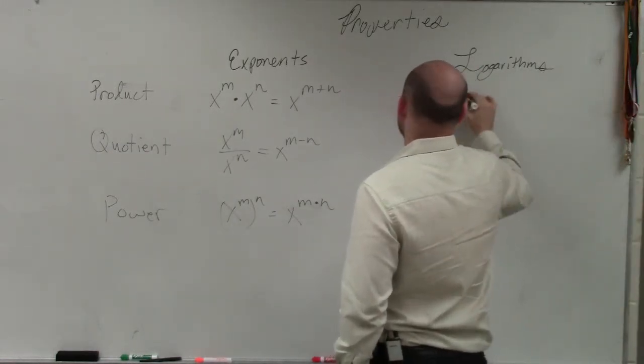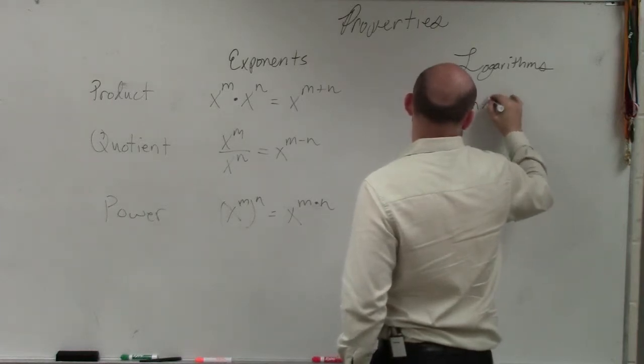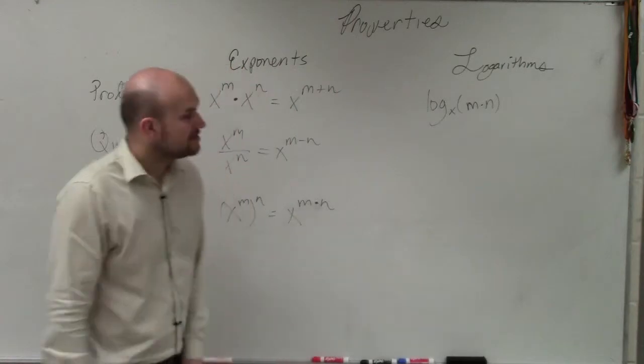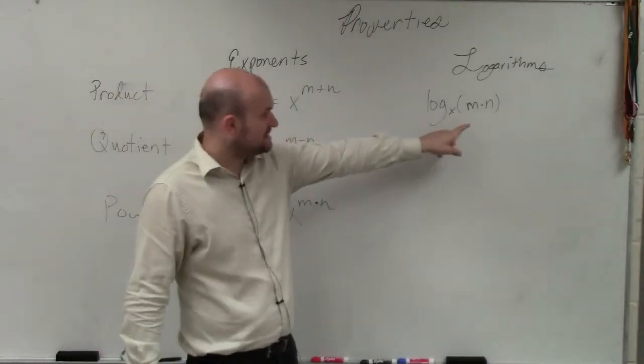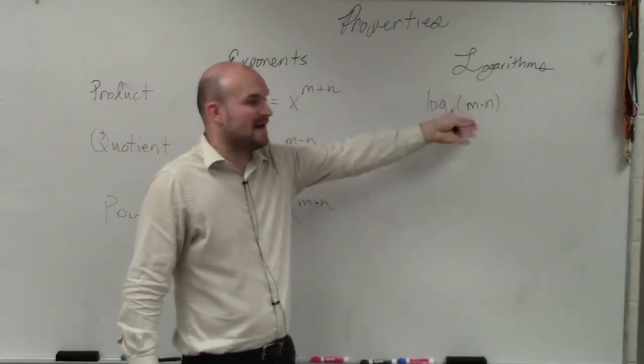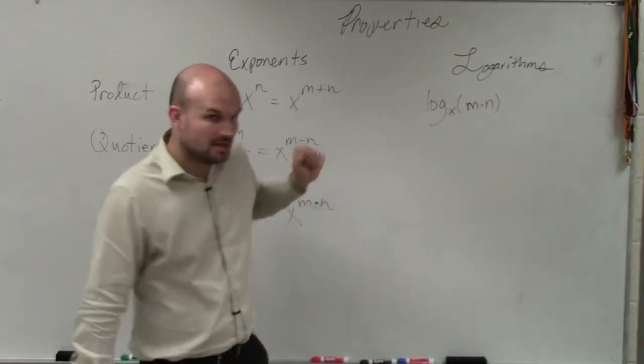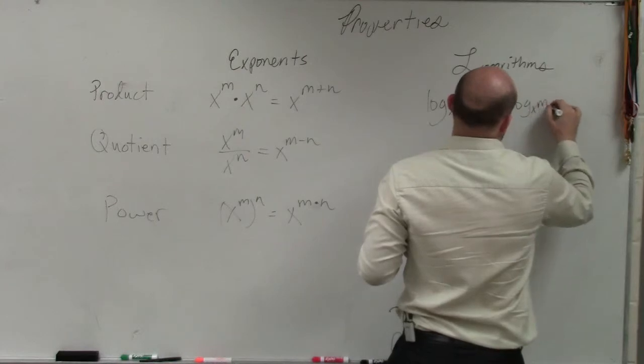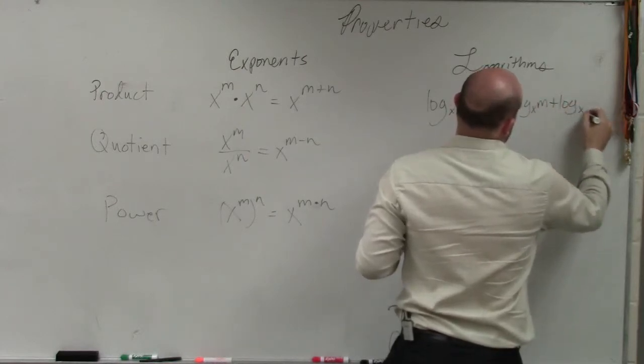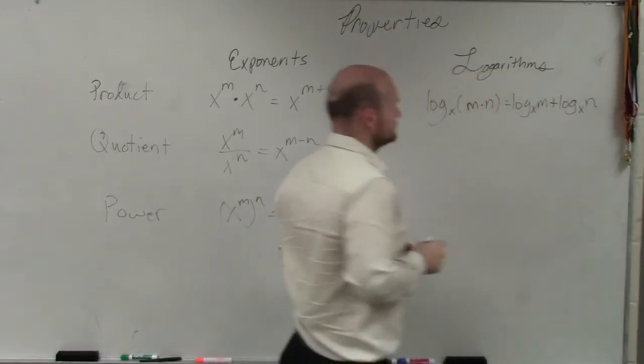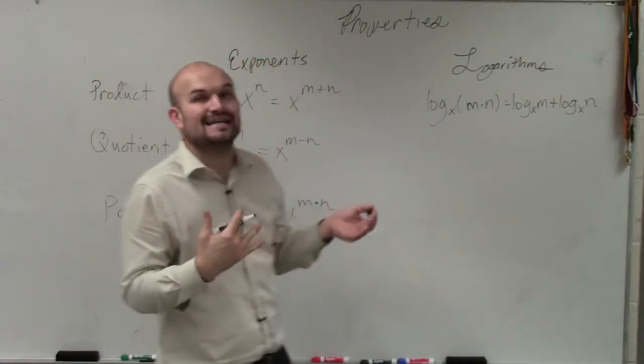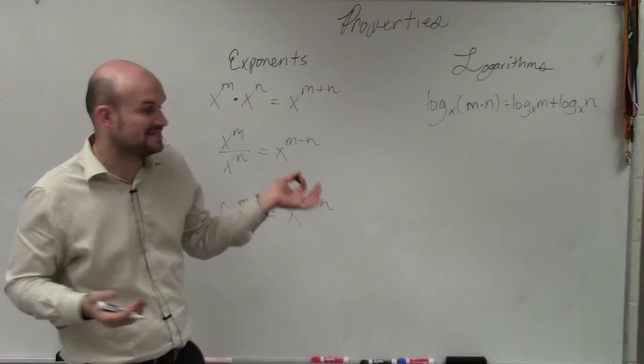So going off of this, if we have a log base x of m times n—so remember, x is your base, and then you're taking the logarithm of m times n—well, if you have the product of two values, you can break that up into log base x of m plus log base x of n. So you can break it up into two separate logarithms where you're adding the logarithms. And notice that the bases are exactly the same.